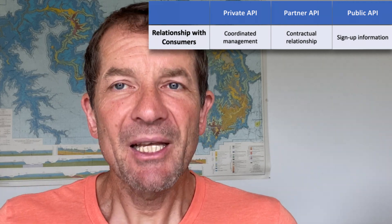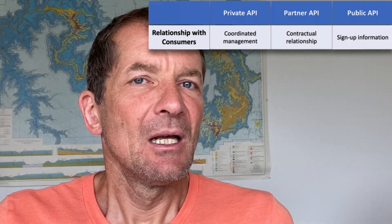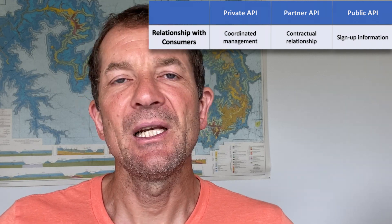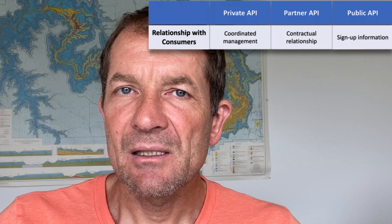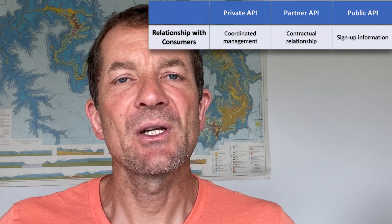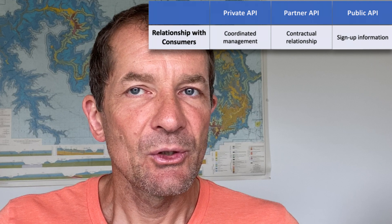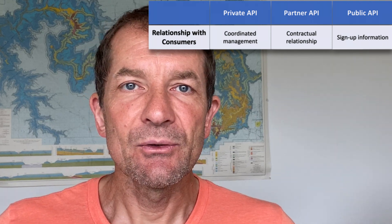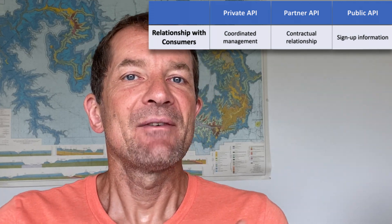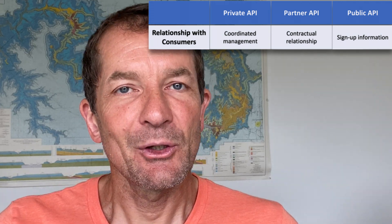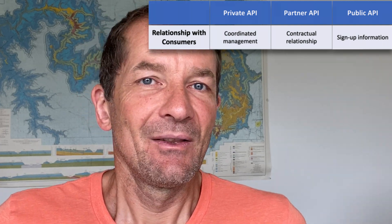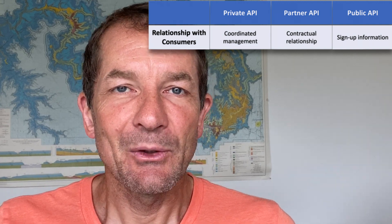For public APIs you may have very little information about consumers. You probably have some sign-up information but you can't really count on it being very reliable or effective. For example, when you want to announce changes to the API it may be really hard to reach all consumers, and you have to take that into account so that consumers don't become unhappy because suddenly stuff happens and they think they never heard about it. So that relationship with the consumer is important as well.